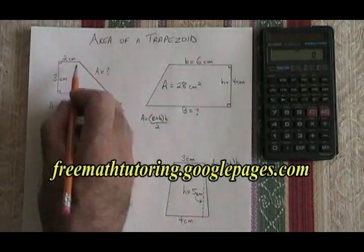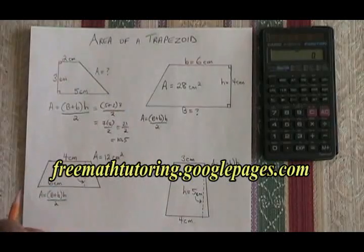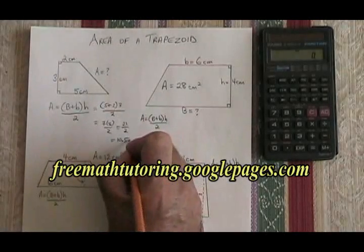The unit of distance for this trapezoid was centimeters, so the unit of area will be centimeters squared.